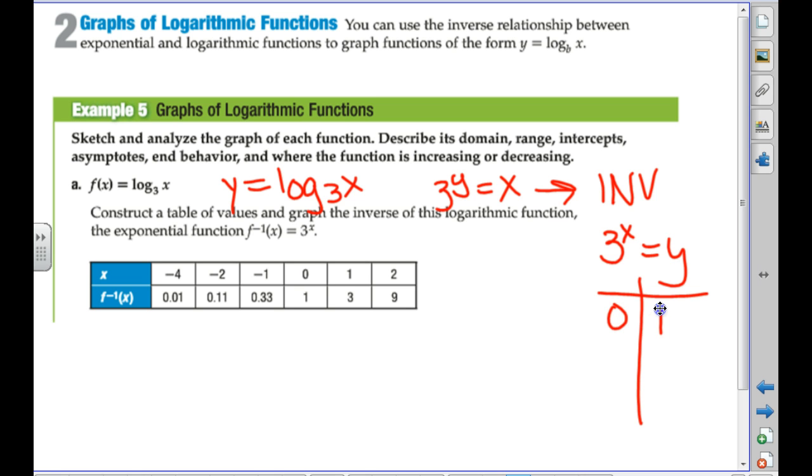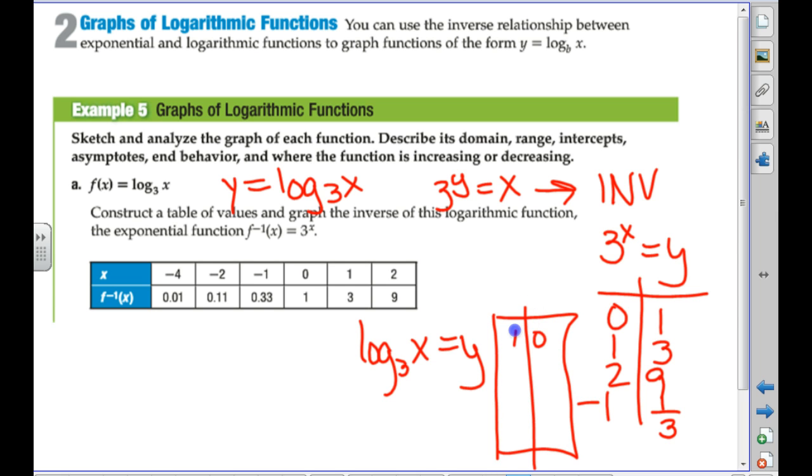So 3 to the x equals y. Give me a couple ordered pairs. 3 to the 0? 1. 3 to the 1? 3. 3 to the 2nd? 9. 3 to the negative 1? 1/3. So when I go to graph the log, I'm going to take all those and flip them around. So log base 3 of x is going to have, as our ordered pairs, the inverse of all these. So it will be 1, 0; 3, 1; 9, 2; and 1/3, negative 1.